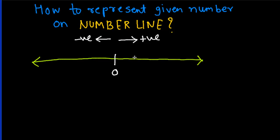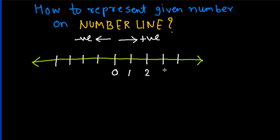We can represent whole numbers on the number line. Let me divide the number line into segments. Such divisions keep going on both sides, as it is infinitely long. The very first number would be 1, 2, 3, and 4, then 5, 6, 7, and it keeps going.